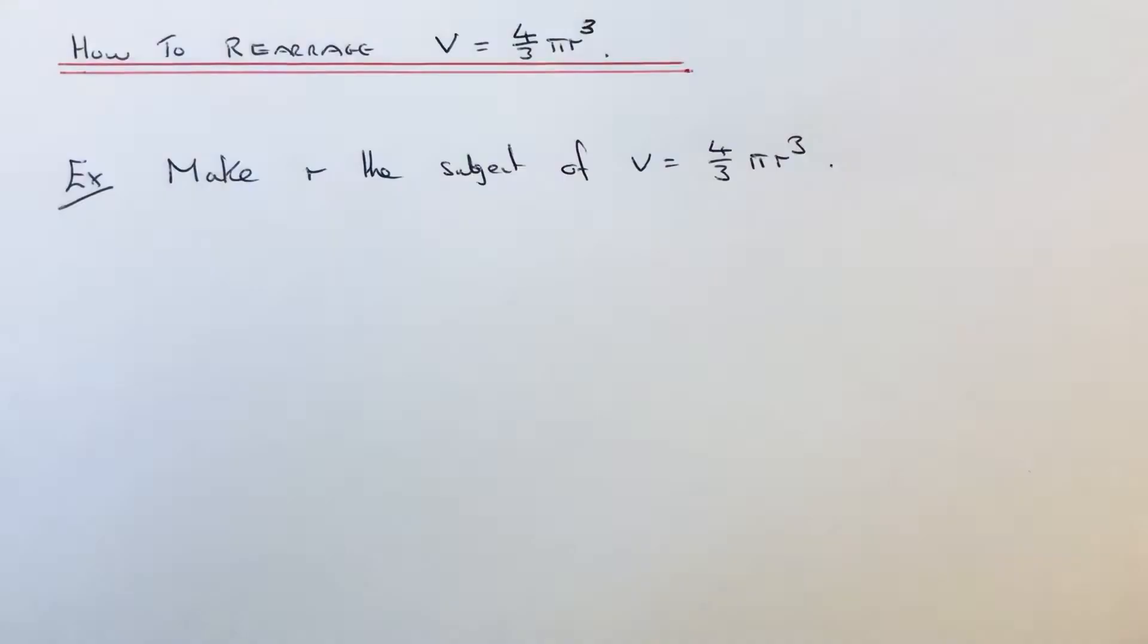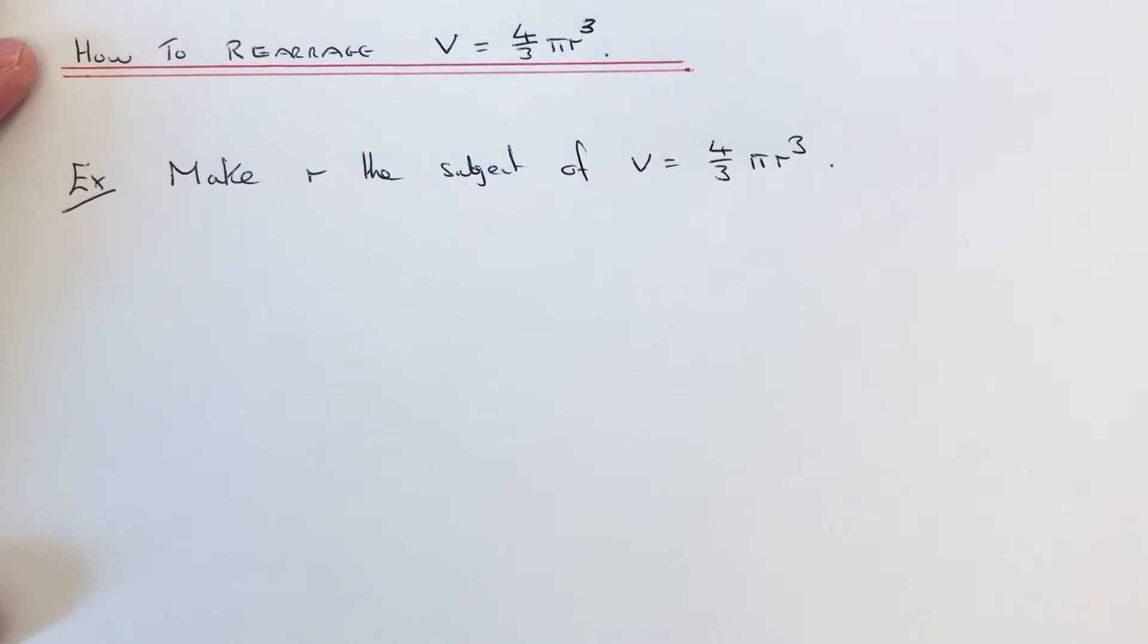Hi guys, welcome back. This is Maths 3000. Today I'm going to show you how to rearrange the formula V = 4/3 π r³ to make the radius the subject of the formula. So this formula is used for working out the volume of a sphere.